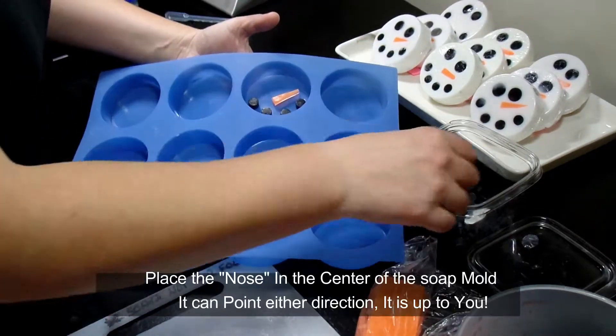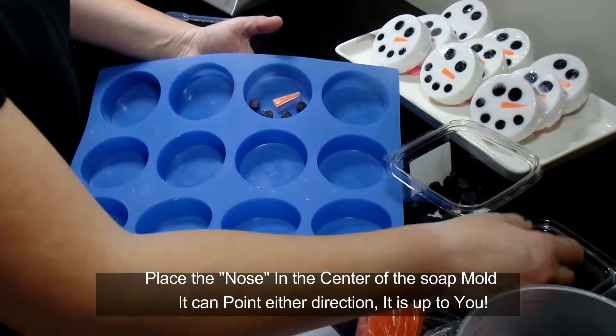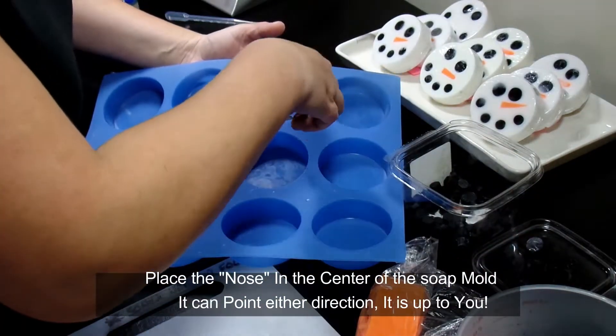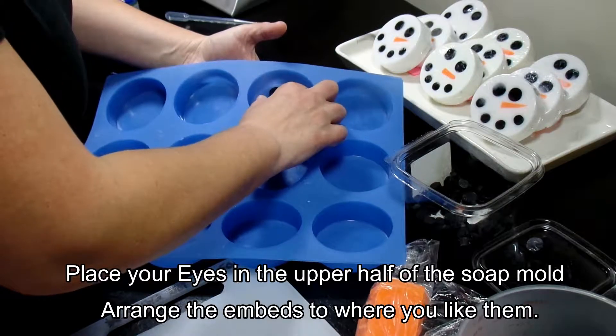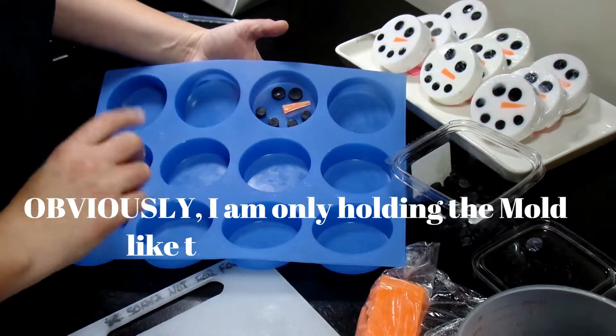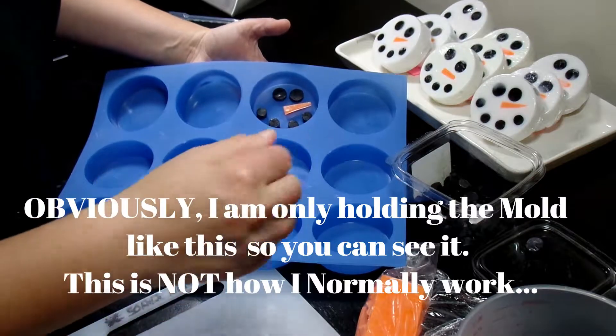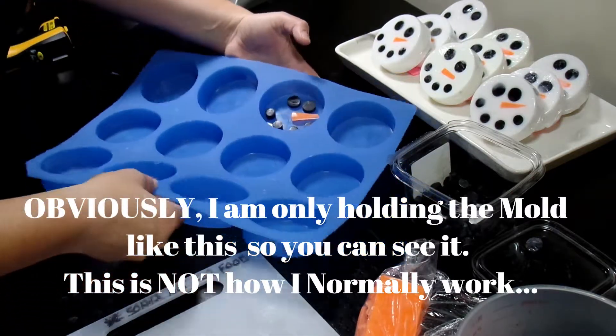You're going to take four of these small circles and you're going to put them on the bottom. Then you're going to take the two bigger circles and make your eyes. Then you can move it around a little bit however you'd like. I think that looks good. Now I'm going to repeat that process for however many snowmen faces I'm making.